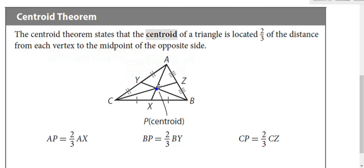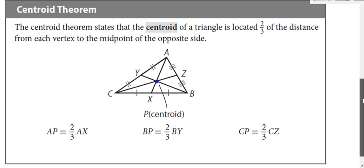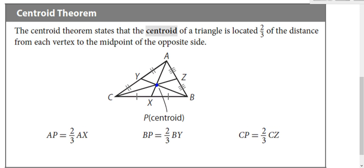That point, since something special is happening there, we gave it a special name — it's called the centroid. The centroid is also the center of mass; it's the balancing point. If that was a triangle made out of wood, if you found the centroid, you could actually balance it from that point. The centroid is the center of mass, or the balancing point, just as a future reference.